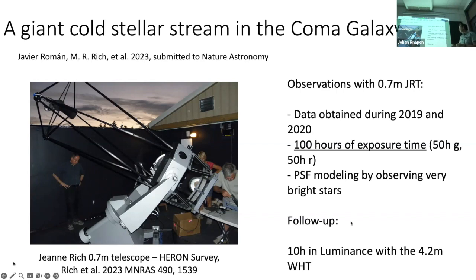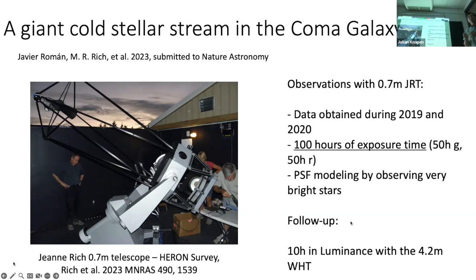We did careful modeling of the scattered light and point spread function by observing very bright stars and seeing how their light propagates through the image. As a follow-up, we obtained 10 hours of imaging with a four-meter telescope using a luminance filter — basically no filter, taking the whole optical band — to collect as much light in the optical as we can, which does destroy color information and astrophysical flux information, but in 10 hours we collect as much optical light as possible.